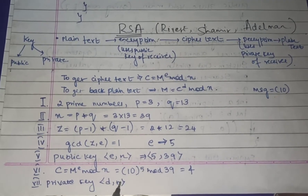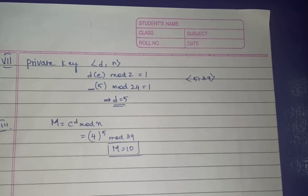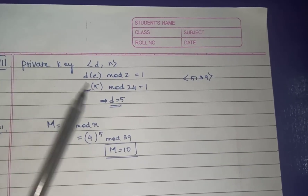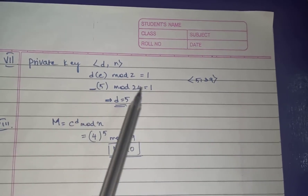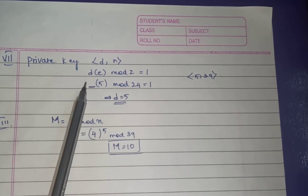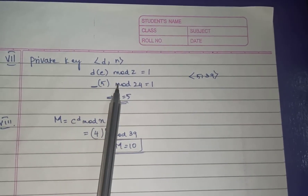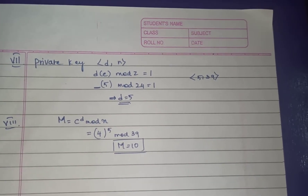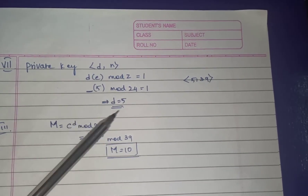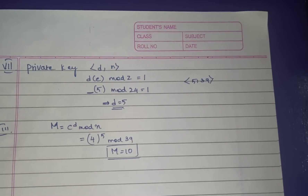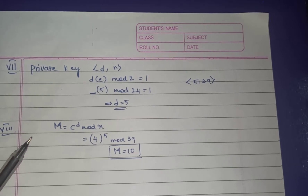Next, find the private key (d, n). You know n = 39, but need to find d using the equation: d * e mod z = 1. You know e = 5 and z = 24. Using trial and error, try d = 5: 5 * 5 = 25, and 25 mod 24 = 1. So d = 5, and the private key is (5, 39).